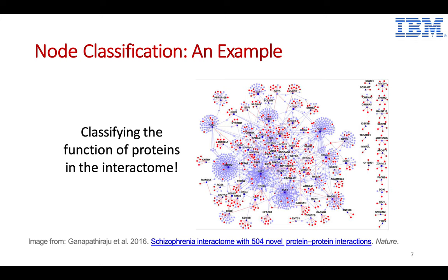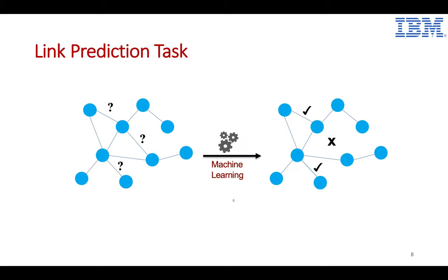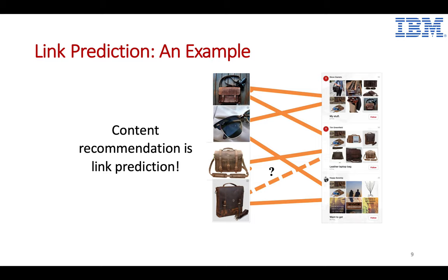In the link prediction task, once we learn embeddings for two nodes and put them together, we predict whether they are linked or not. This is very important in real applications — for example, in recommendation systems, we predict whether an item is linked to a user so that we can recommend the right item to the right user.